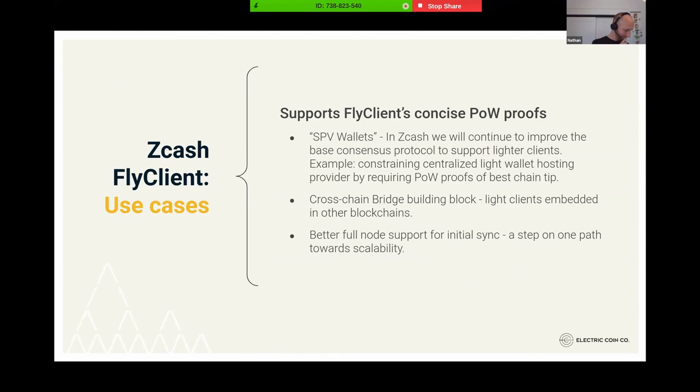Moving on. The next few slides are walls of text, but I'll pick just the best parts. There's several use cases for FlyClient proofs. What these are is they allow concise proofs about the proof of work history. What that helps with is any time you have a light client that needs to verify they have the correct chain history. FlyClient allows them to do that by receiving a relatively small proof from another node rather than needing to retrieve all of the block headers. That can be significant for light clients. There are multiple light client use cases.